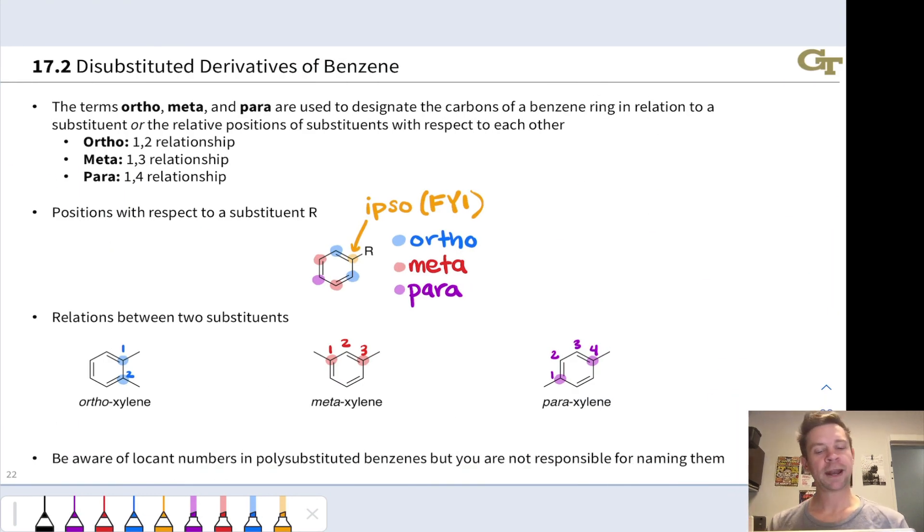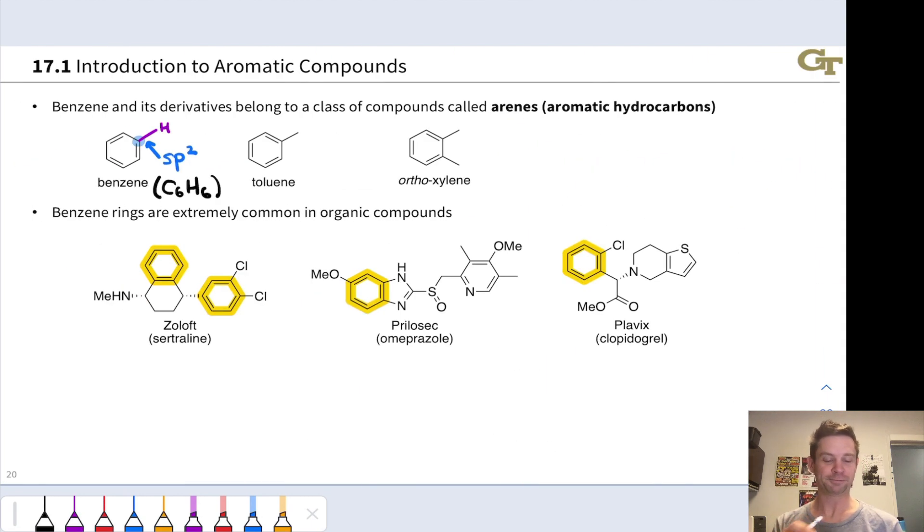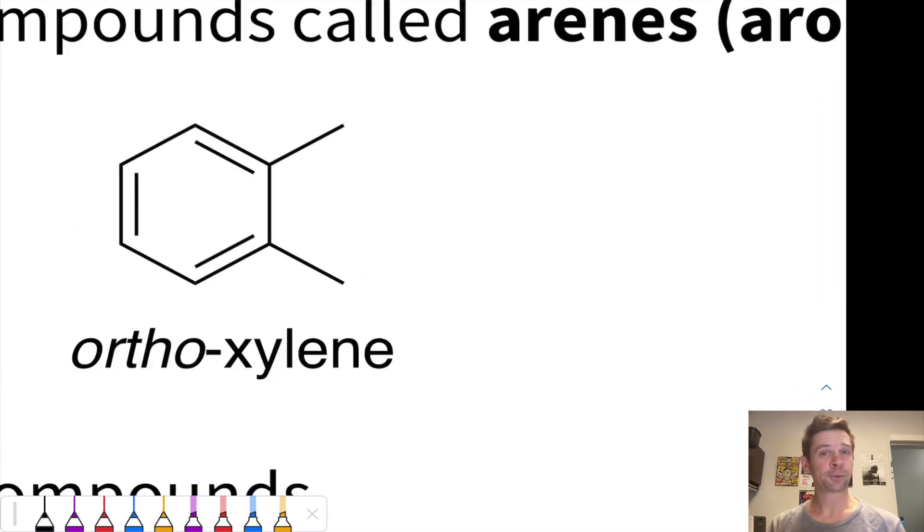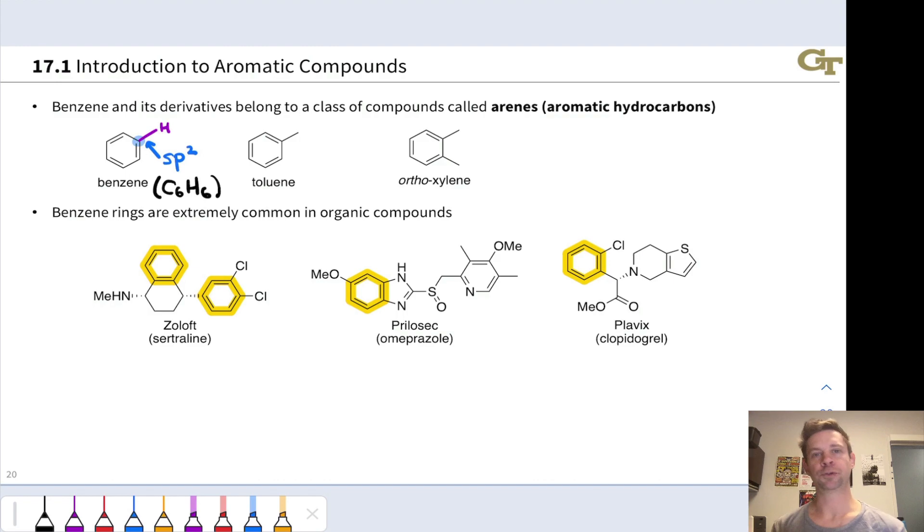The terms ortho, meta, and para are used to designate the carbons of a benzene ring either in relation to a substituent or the relative positions of two substituents with respect to each other. Benzene's got quite a few carbons, and if we look, for example, at ortho xylene, there are three different ways those methyl groups could be arranged around the carbons of the benzene ring. Here they're in a 1-2 relationship, but we could also have a 1-3 relationship with the second methyl group linked here, or a 1-4 relationship with the second methyl group linked here. And it's helpful to have terms to distinguish between those possibilities.